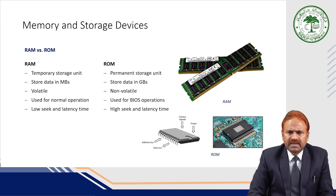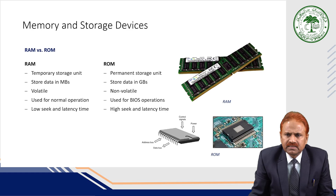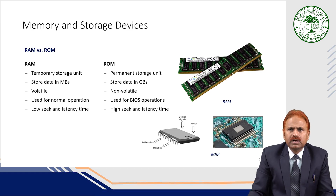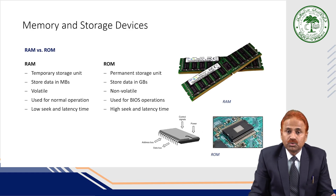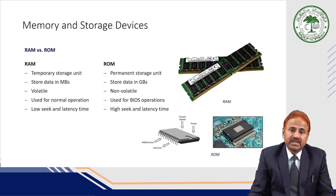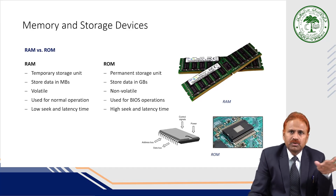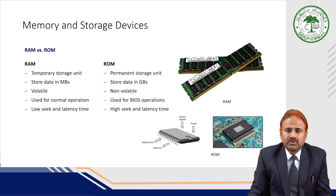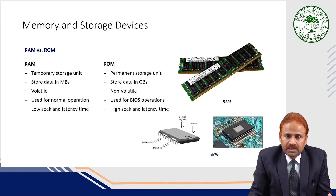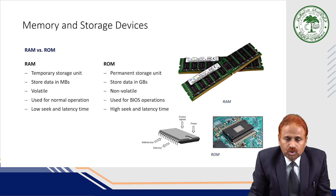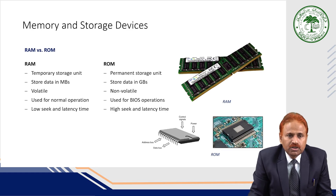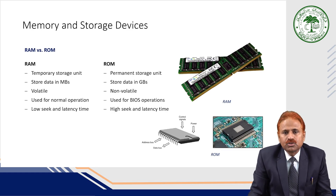Here is a comparison between RAM and ROM, which we have already discussed in a previous lecture, just to refresh your memory. RAM is a temporary storage unit while ROM is a permanent storage unit. RAM stores data and is volatile in nature — when the power goes off or the computer shuts down, the information on RAM is lost. ROM is non-volatile, so data always remains regardless of whether the computer is on or off. RAM is used for normal operation and ROM is used for BIOS operation.